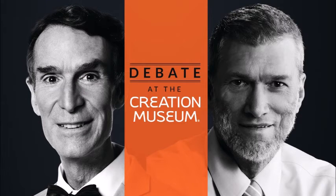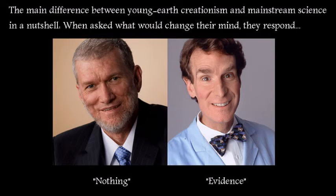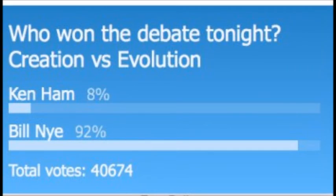I wondered about the implications of this concerning the number of animals before and after the mythical global flood. Fortunately, Ken Ham answered my thoughts in his debate with Bill Nye. He said that 7,000 pairs of animals got off the ark and basically evolved into all the animals we see today. Nye pointed out there are about 16 million species of animals, and if this were so, we should expect nearly 11 species of animal to appear per day — clearly an unreasonable expectation.